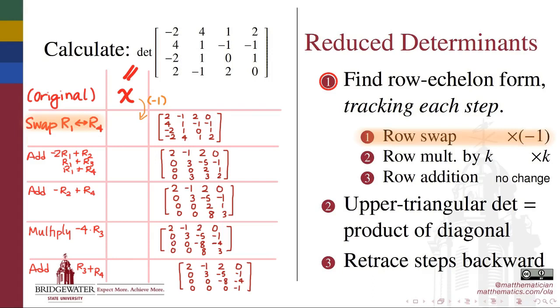By properties of the determinant, anytime we swap two rows of a matrix, we reverse the sign of that determinant. So whatever my original determinant was, if I call it x, after this first step, the result of this determinant should be the opposite of x.